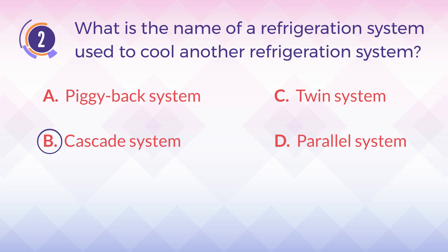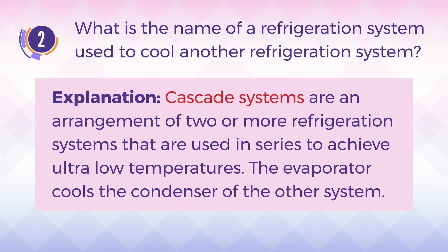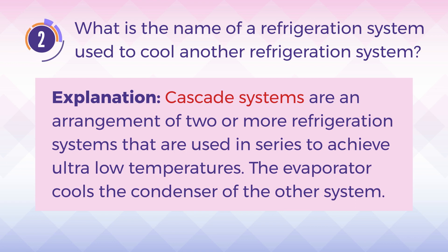The answer is B, cascade system. Cascade systems are an arrangement of two or more refrigeration systems used in series to achieve ultra low temperatures. The evaporator cools the condenser of the other system.